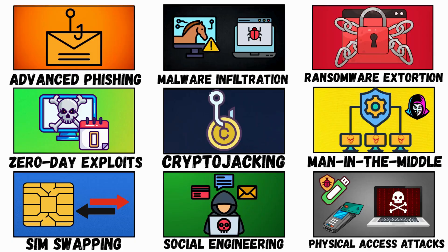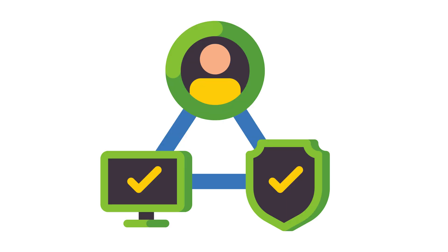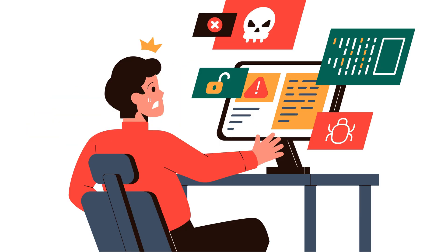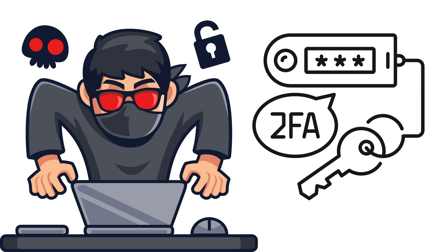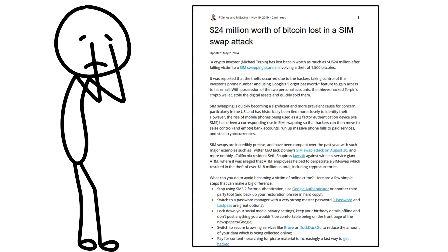Method 7: SIM Swapping. Hackers steal your phone number to bypass two-factor authentication. They gather your name, number, and carrier via phishing or data leaks, then call your carrier: 'I lost my phone — transfer my number to this new SIM.' They then receive your 2FA codes and access your email, bank, and crypto wallets. In 2023, one SIM swap victim lost $24 million in crypto in minutes.